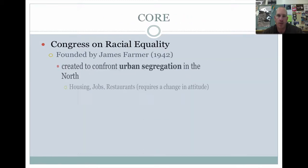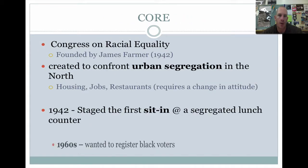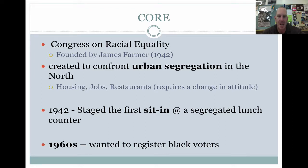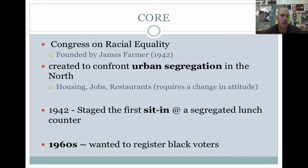First off with CORE, the Congress on Racial Equality, founded by James Farmer in 1942 during World War II. It was created to confront urban segregation in the North, which is basically de facto segregation — housing, jobs, restaurants. De facto requires a change in attitude, not a change in law.